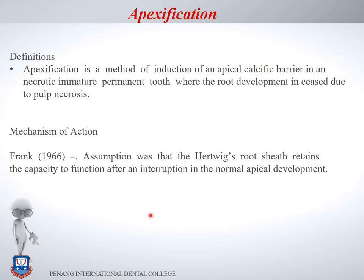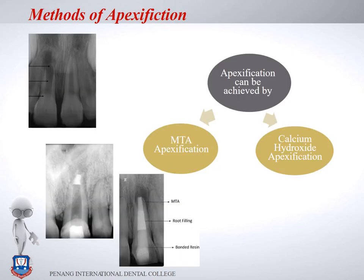The mechanism of apexification: Hertwig's root sheath retains the capacity to function after an interruption in normal apical development. Some Hertwig's root sheath remains in the apical papilla of an immature root and can be used to form a calcific barrier. As seen in the radiograph, an open apex with an MTA calcific barrier is clearly evident.